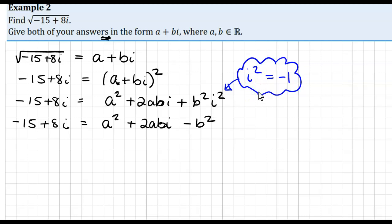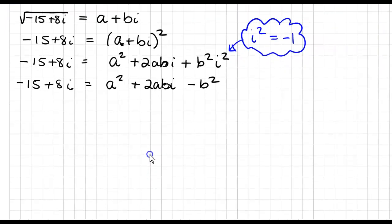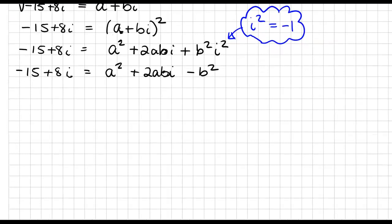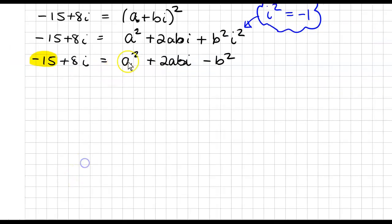Now, at this stage, we put reals equal to reals and imaginaries equal to imaginaries, so picking those out, I have minus 15 is real because there's no i's attached, I have A squared to be real because there's no i's attached, and I have minus B squared to be real because there's no i's attached,